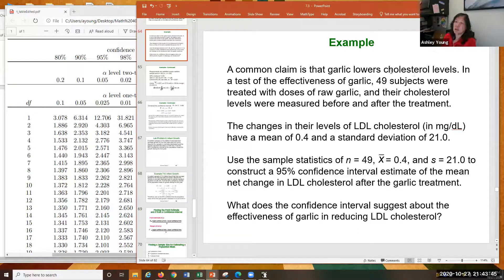Common claim is that garlic lowers cholesterol levels. So they took 49 subjects, treated them with garlic, and measured their cholesterol before and after. So look at the change. The change of the cholesterol level had a mean of 0.4, standard deviation of 21. We're going to use these statistics. N is 49. X bar, right? My mean is 0.4. My S is 21.0.